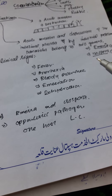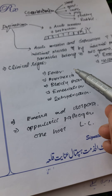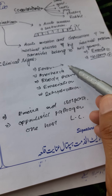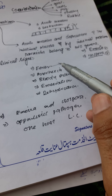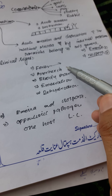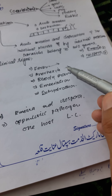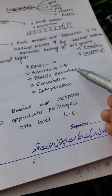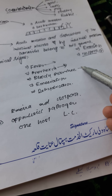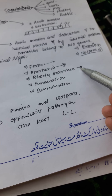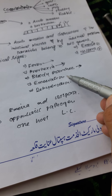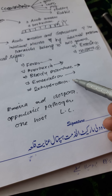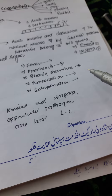The clinical signs, as I told you earlier: there will be fever, there will be anorexia — the animal will not eat — and there is bloody diarrhea. The animal becomes weak, emaciated, and dehydration takes place.